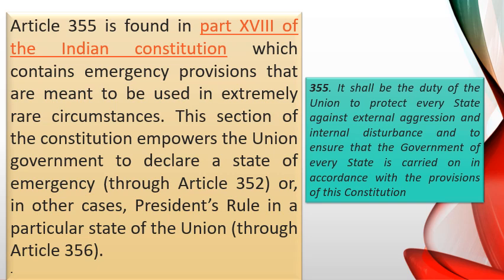Part 18 is related to emergency provisions. There are three types of emergency given in this part. The first is national emergency, the second is state emergency, and the third is financial emergency. The provisions regarding national emergency are given under Article 352, the provisions regarding state emergency are given under Article 356, and the provisions regarding financial emergency are given under Article 360.